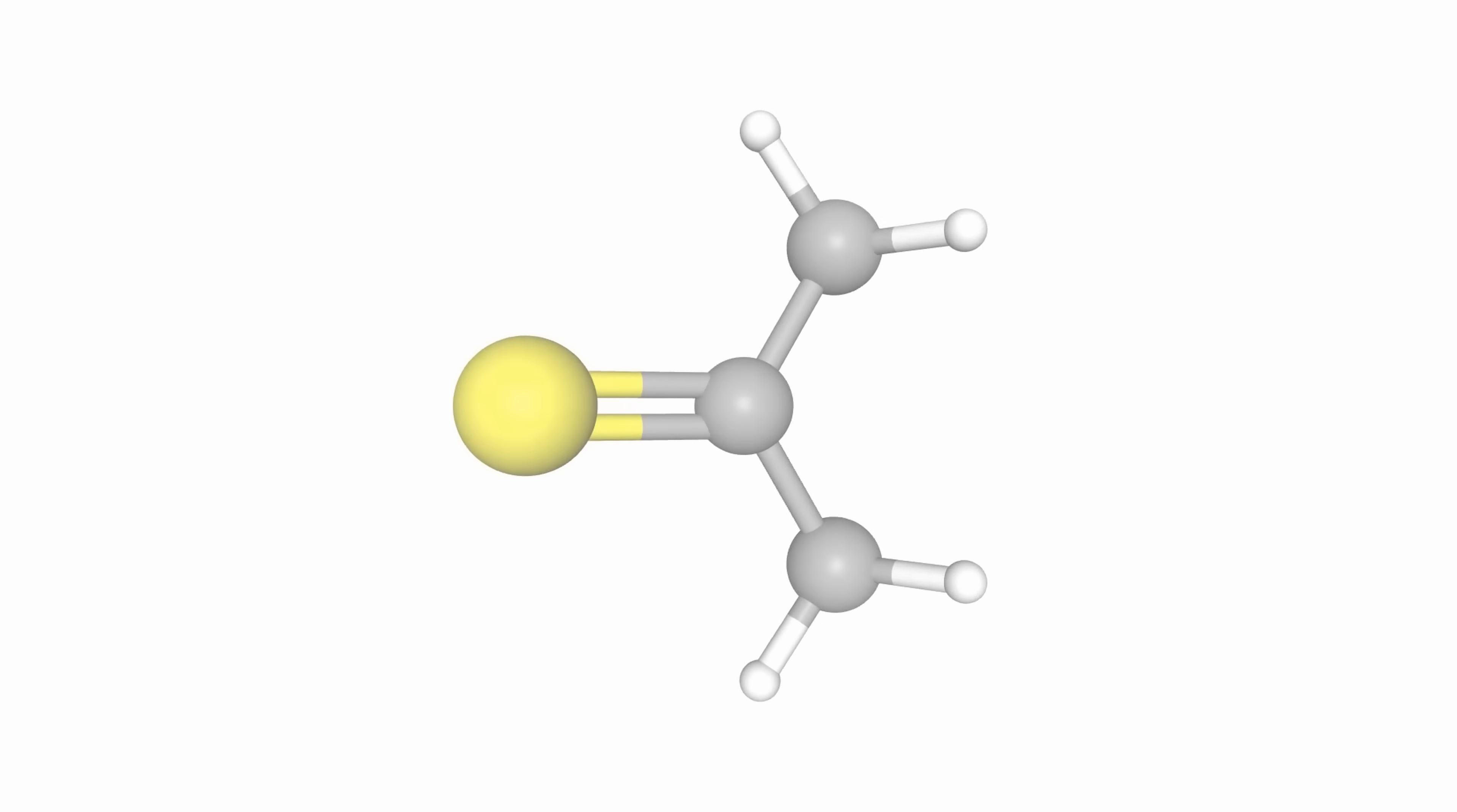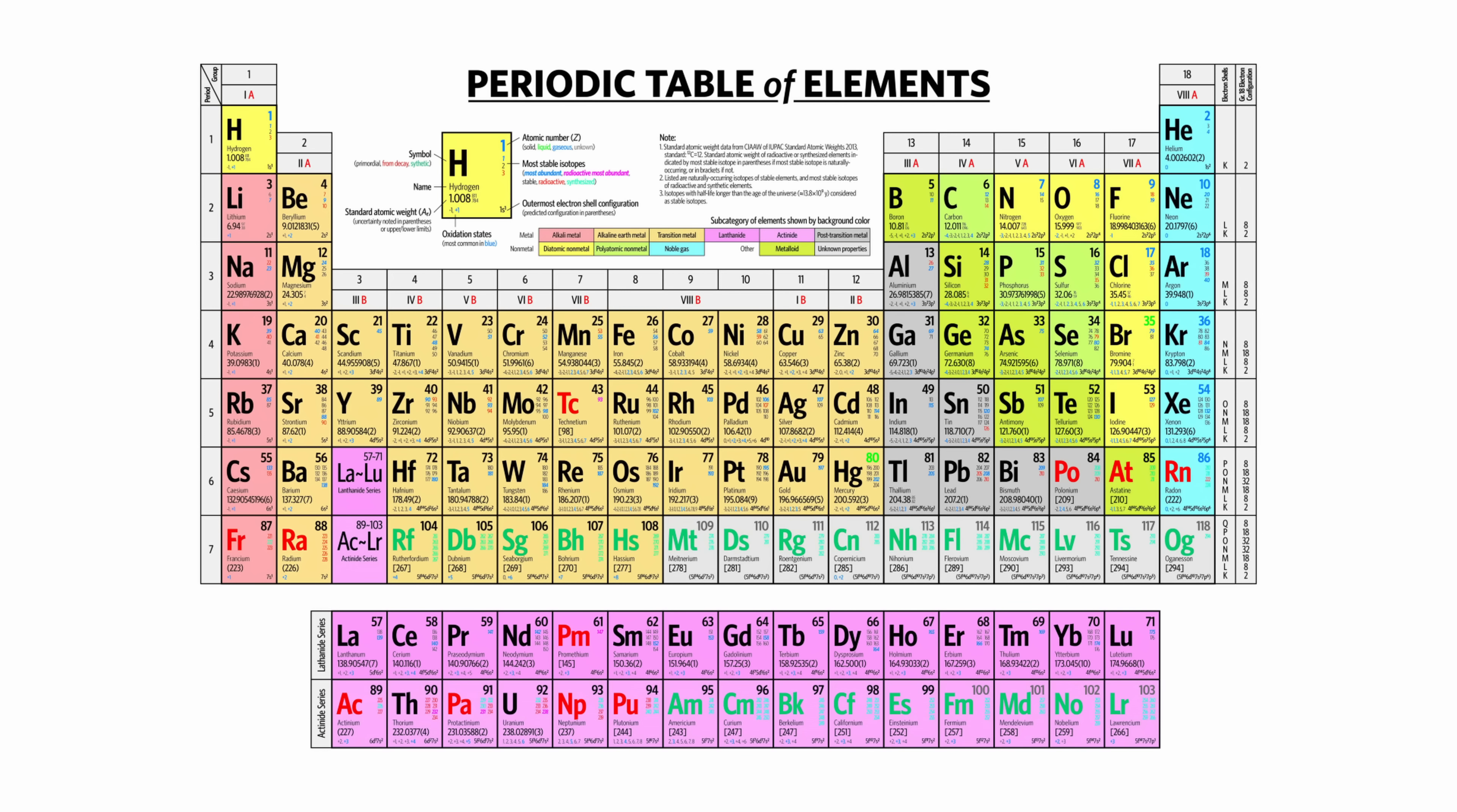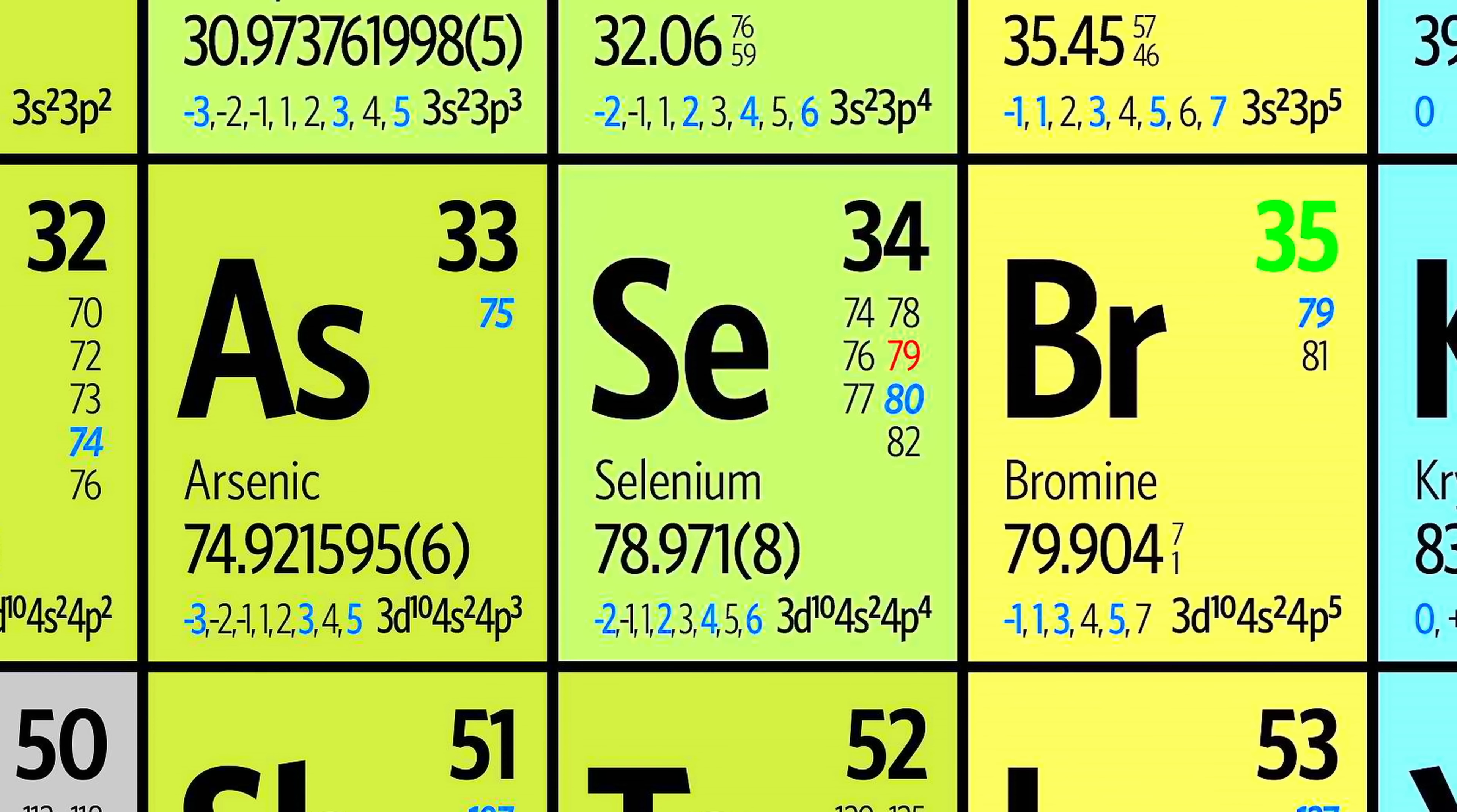Now, when declaring war on a chemical, one must first find its weakness. Looking closely at thioacetone's molecular structure, one can see that it's an organosulfur compound. And if the myths are to be believed, the only way to beat sulfur in a battle of stench is with its scarier, more dangerous older brother, selenium.